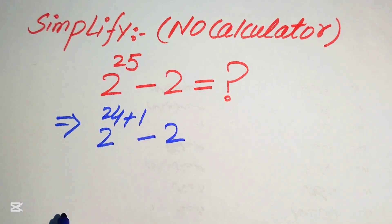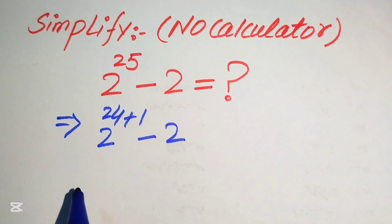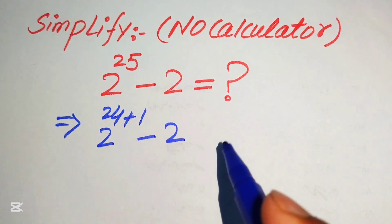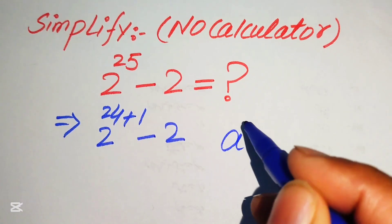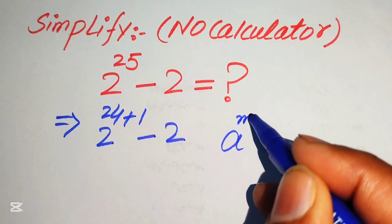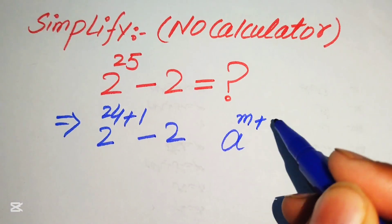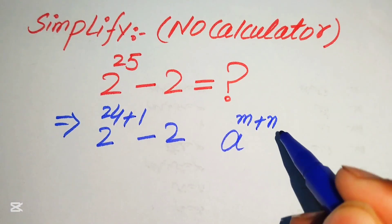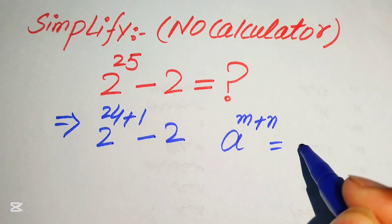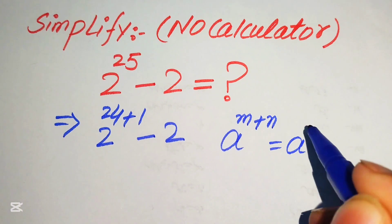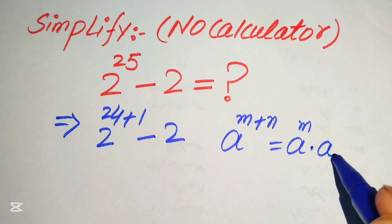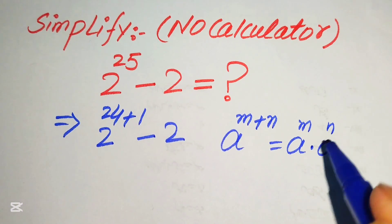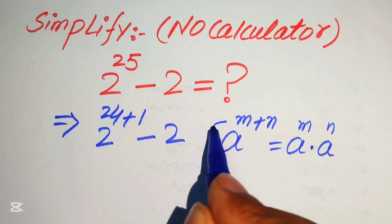After this step we need a nice exponent law. You know that if we have a to the power of m plus n, it equals a to the power of m multiplied by a to the power of n.